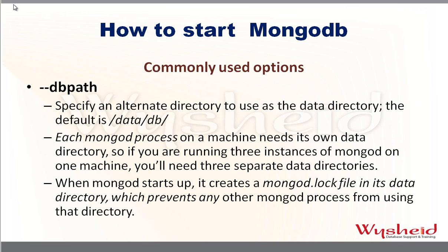The most commonly used parameter is the DB path. By default, MongoDB on Linux expects the directory '/data/db' as the data directory. But if you are starting more than one MongoDB process, multiple server processes cannot use the same data directory, so you must have a different data directory for each MongoDB process.